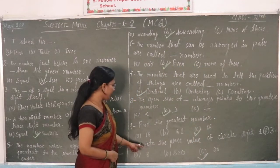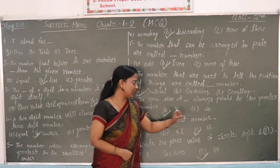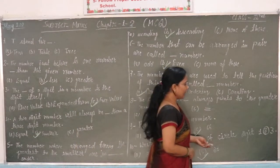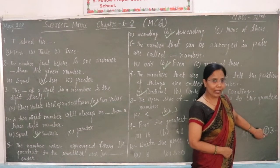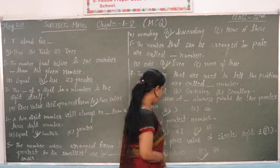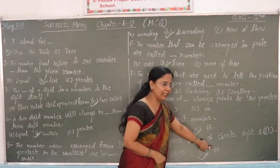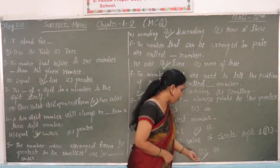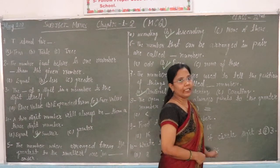Question 10: Write the place value of the circled digit. The number given has the digit 8 circled. I am going to find the place value. Options: 800 and 18. The place value is 8.